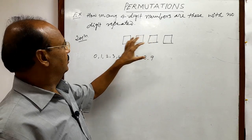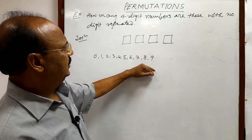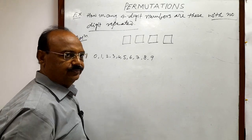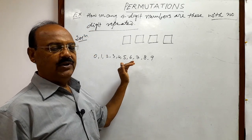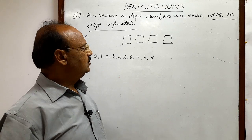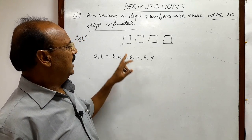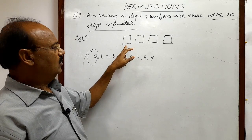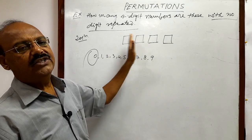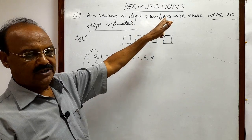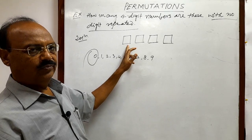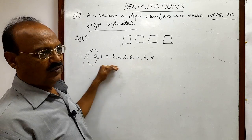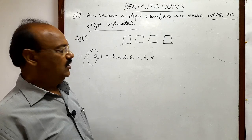We have to form a four-digit number with the help of these digits, and the condition is with no digit repeated — meaning any digit can be used only once. A very basic thing to understand is that the thousands place cannot be filled with zero, because if you place zero here, this will become a three-digit number. But we have to form four-digit numbers, so zero will not be put here.